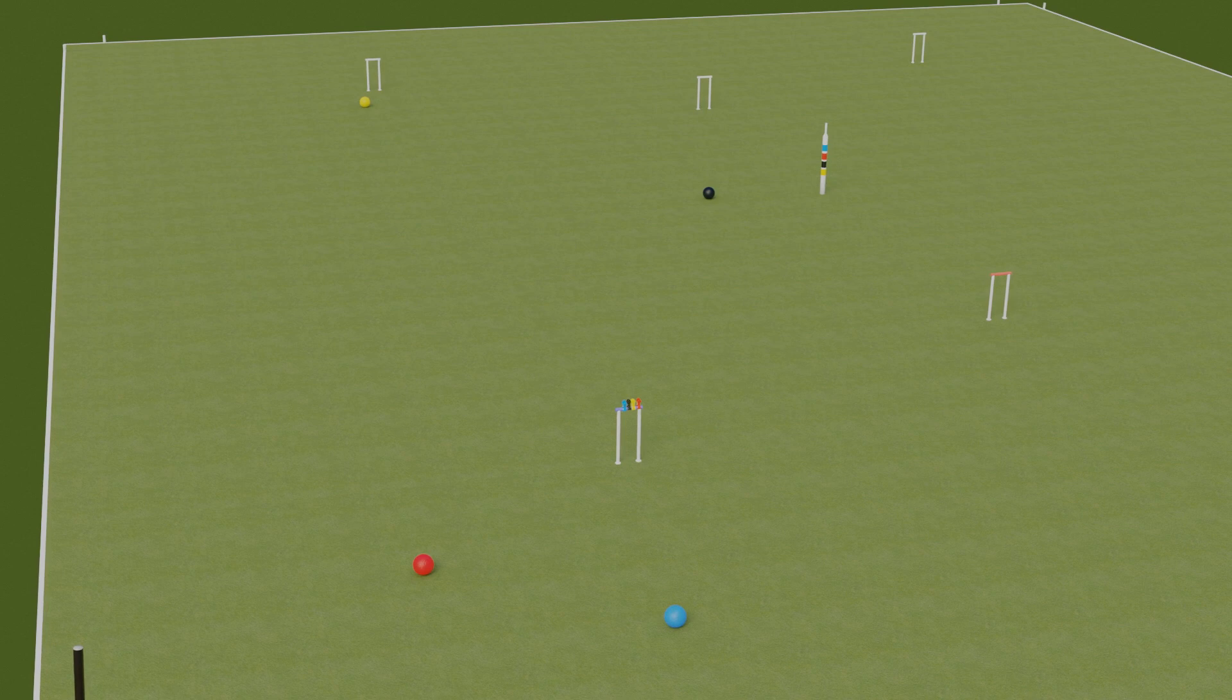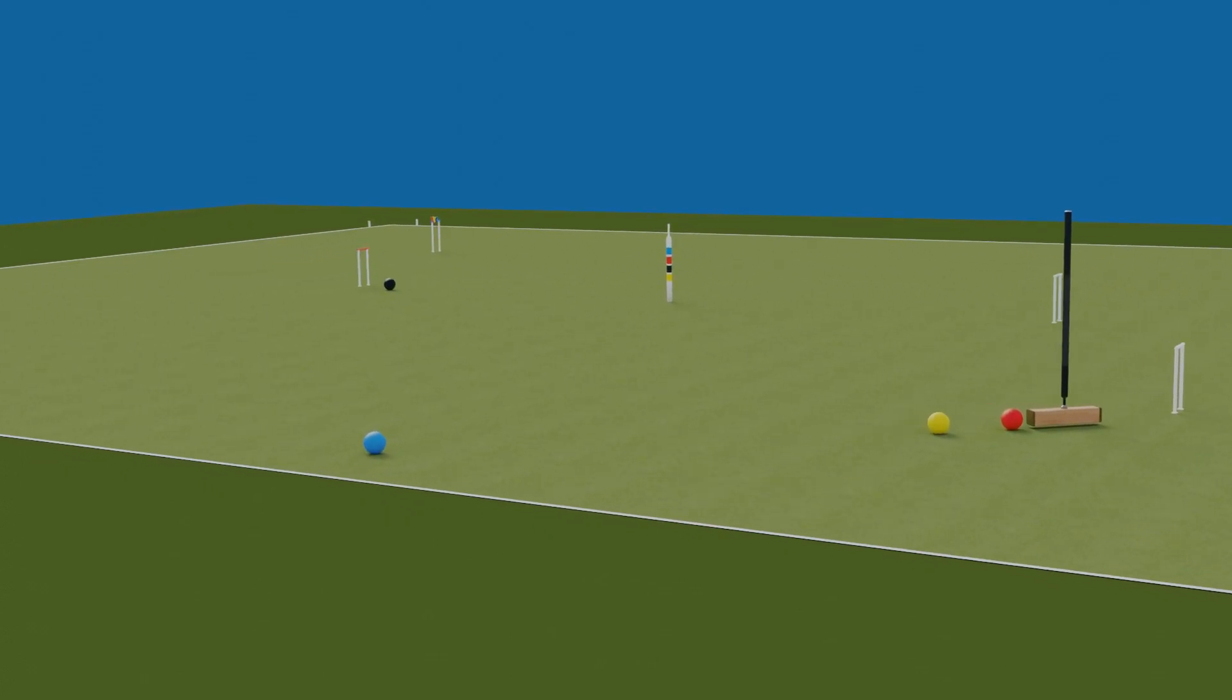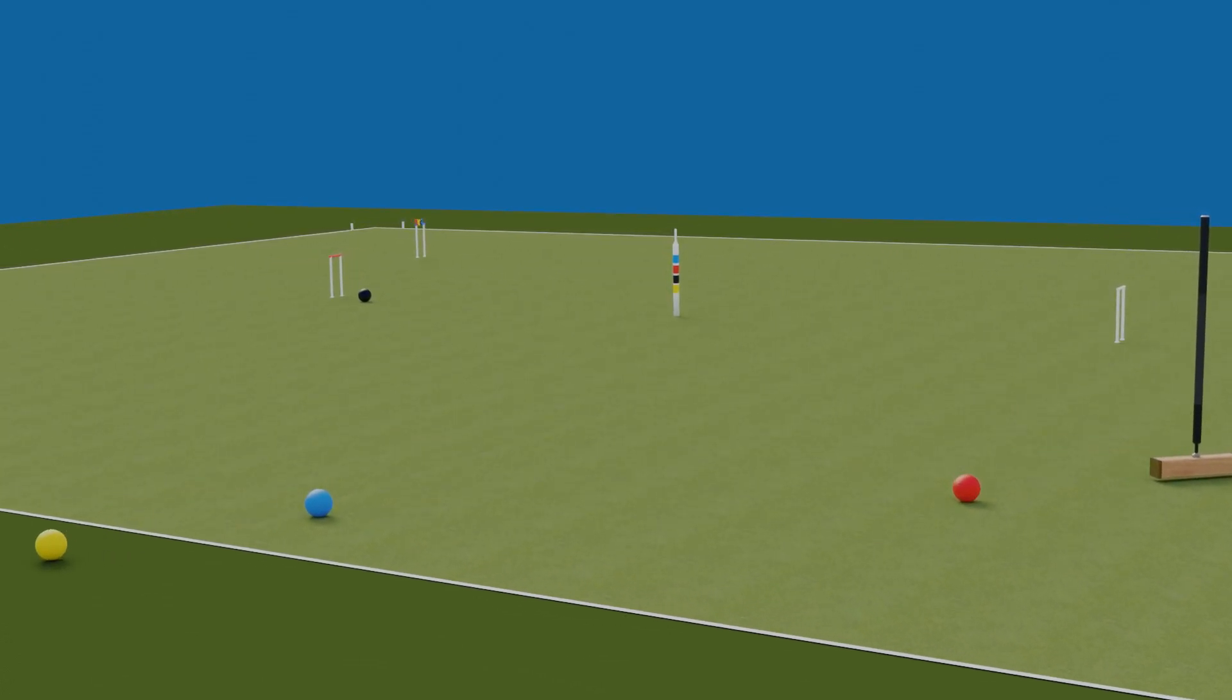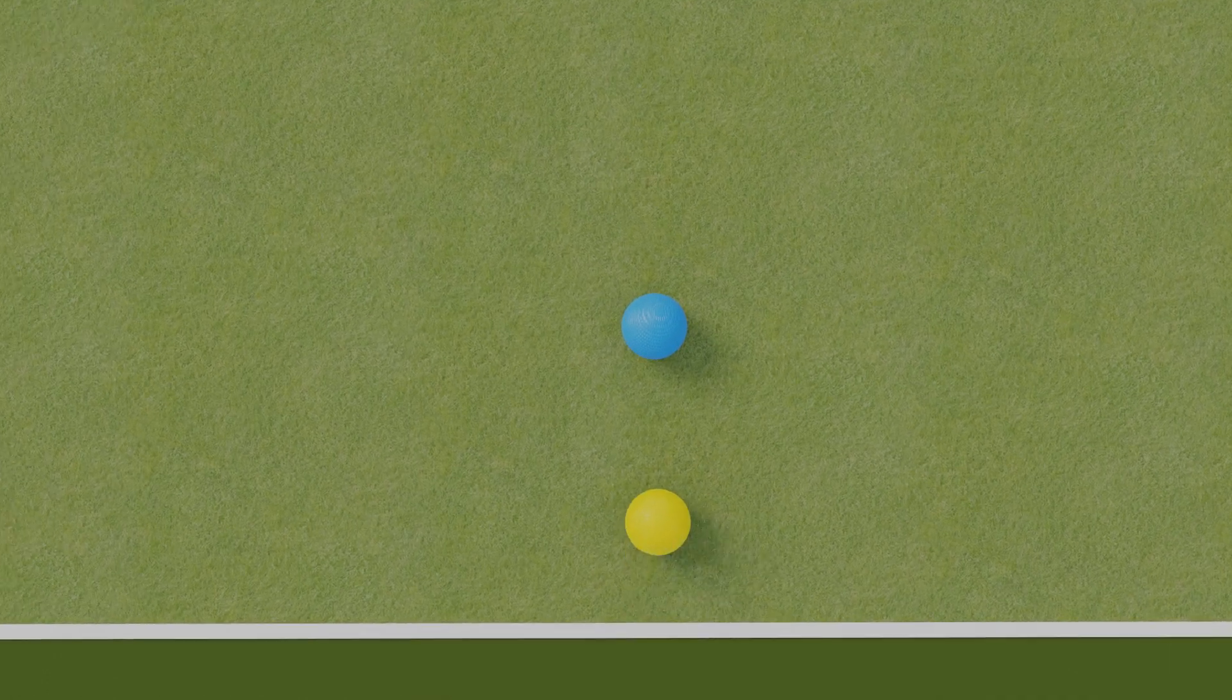Generally, the situation for a cannon arises when a ball has been roqueted off the lawn and yarded in exactly to a spot already occupied by another ball.